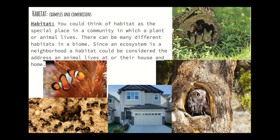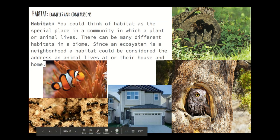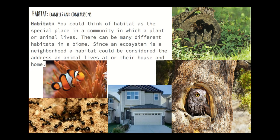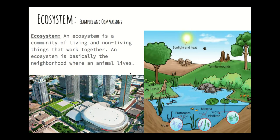A habitat is specifically the place where an animal lives. I have many different examples here: a habitat for a rabbit might be a hole in a tree or in the grass. Both 'habitat' and 'home' start with H — that's a good way to remember it. An owl lives in a tree, ants live in their hole — that is their home, just like you have a house or apartment.